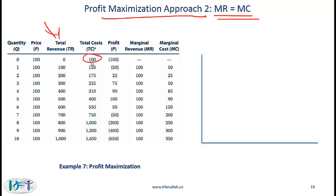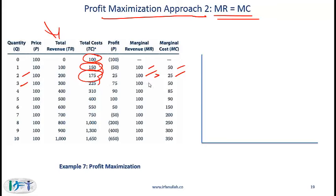The fixed cost is 100 since at a quantity of 0 the cost is 100. When we produce the first item the total cost is 150, meaning the marginal cost is 50. The additional revenue is 100, so it makes sense to keep going. With the second item, the additional revenue is 100 and the additional cost going from 150 to 175 is 25. Again, marginal revenue is greater than marginal cost, so it makes sense to produce. The marginal revenue is always 100. With items 3, 4, and 5 we keep going because marginal revenue is greater than marginal cost.